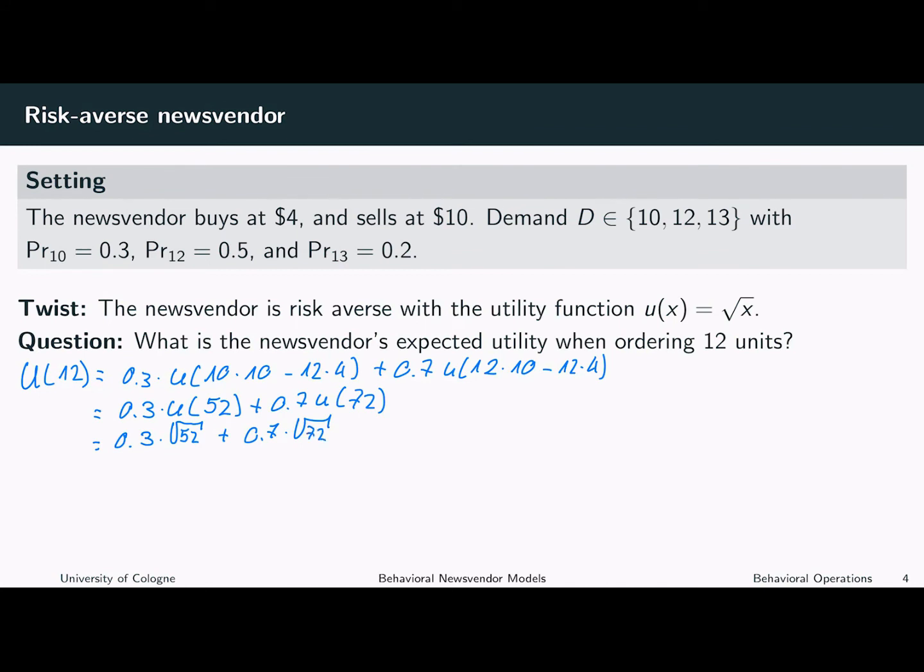If you plug it into your calculator, you will see that this is about 8.10. This means we calculated the expected utility of a risk-averse newsvendor with the utility function square root of x when ordering 12 units.